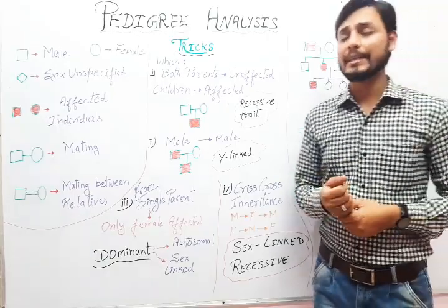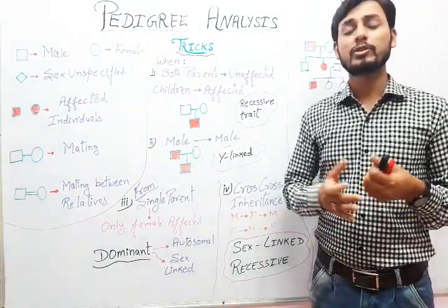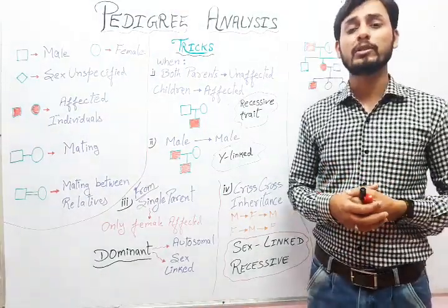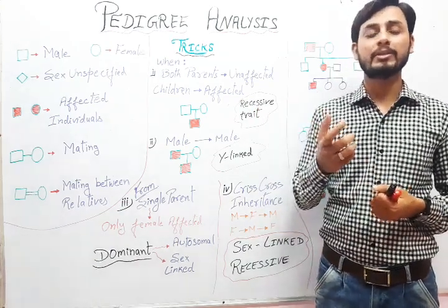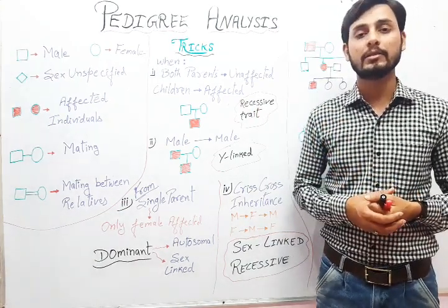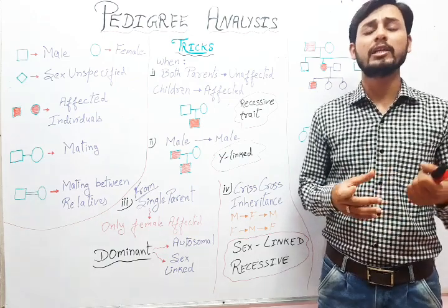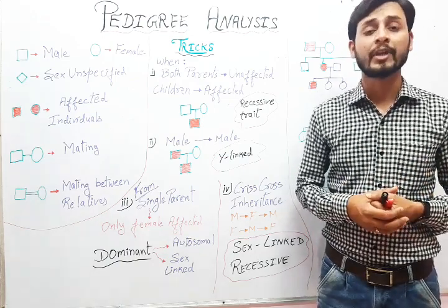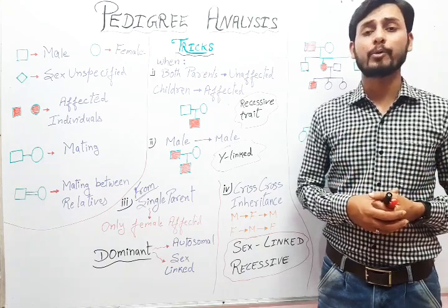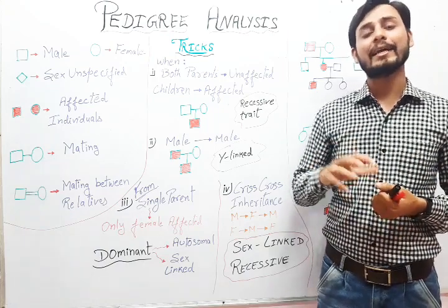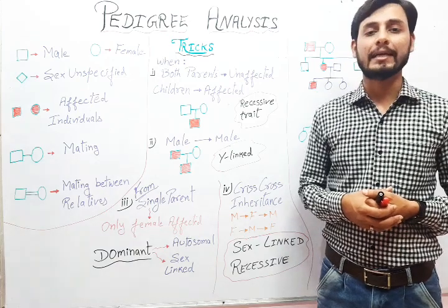Pedigree analysis is used to find out the inheritance pattern in the case of human beings. Since studying human genetics directly is a cumbersome process, researchers draw a probability diagram and analyze it — that is called pedigree analysis.